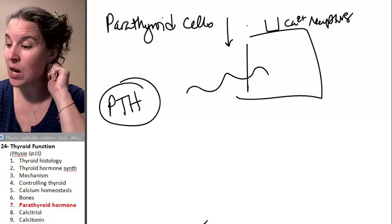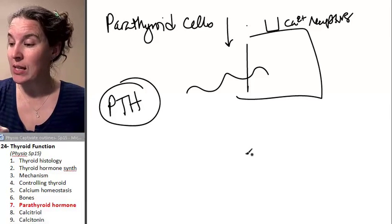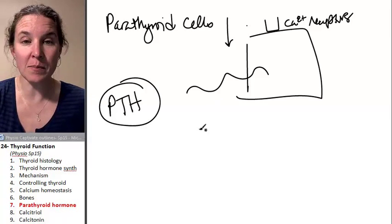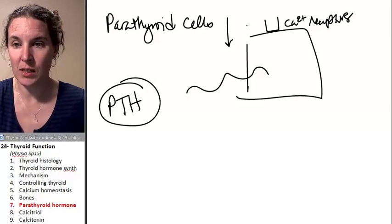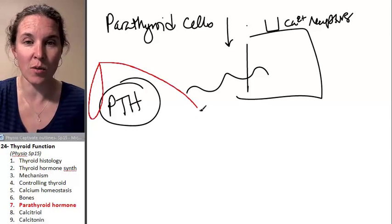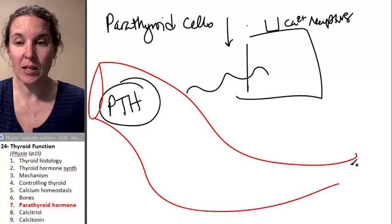Parathyroid hormone goes into the system, goes into the blood. I guess that makes sense since we're talking about a hormone here. And guess where they go?